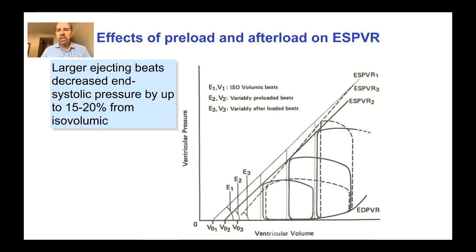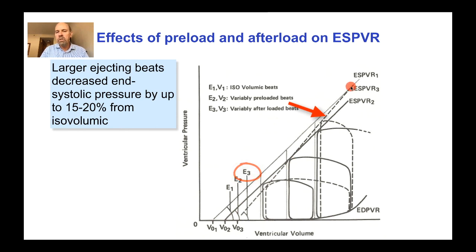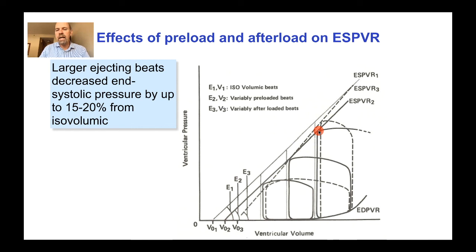Another experiment compares isovolumic beats with variably preloaded ejecting beats — which give rise to one end-systolic pressure-volume relation — and variably afterloaded beats, which give a different end-systolic pressure-volume relation. These three different loading conditions do not yield an identical end-systolic pressure-volume relation, differing by as much as 15 to 20 percent — another estimate of the accuracy of the time-varying elastance approximation. The study also shows that the more ejection occurs and the greater the shortening, the greater the decrease in pressure versus isovolumic, demonstrating a deactivating effect of shortening or ejection compared with an isovolumic beat — which is not accounted for in the time-varying elastance theory.